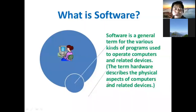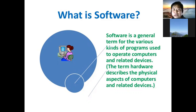The computer system consists mainly of two parts: hardware and software. What is the software? The software is a general term for the various...